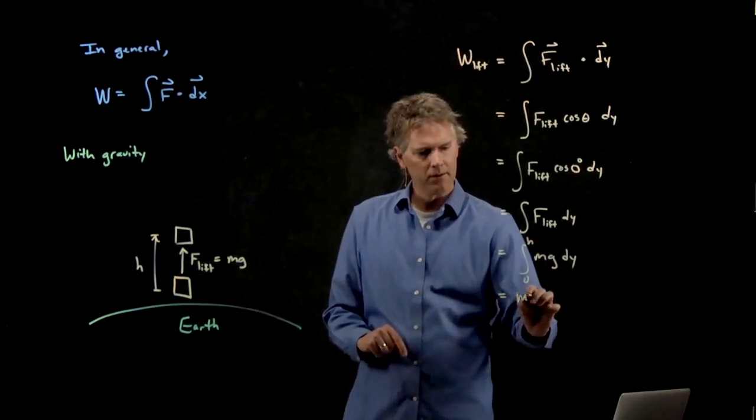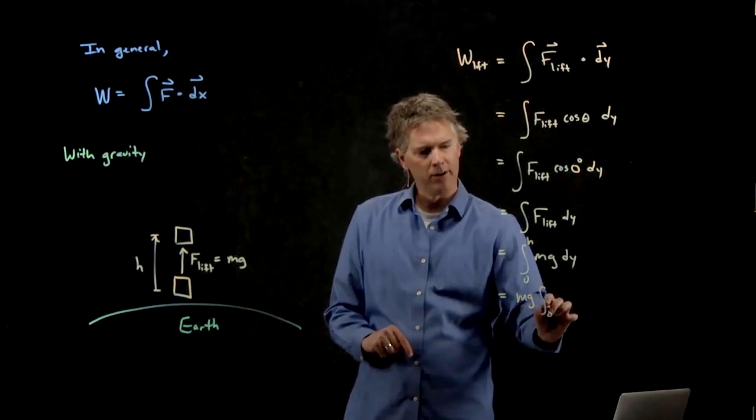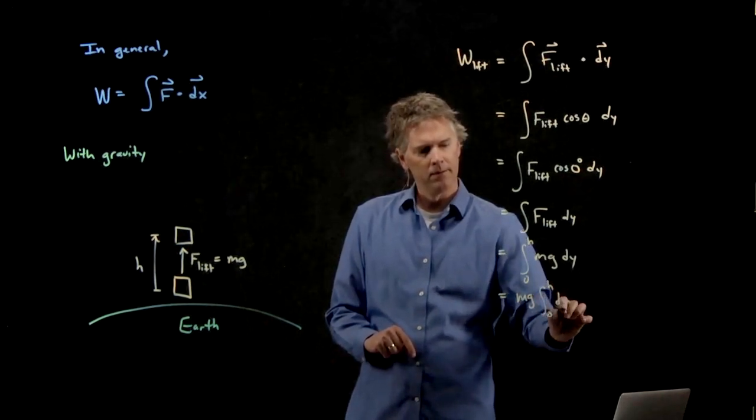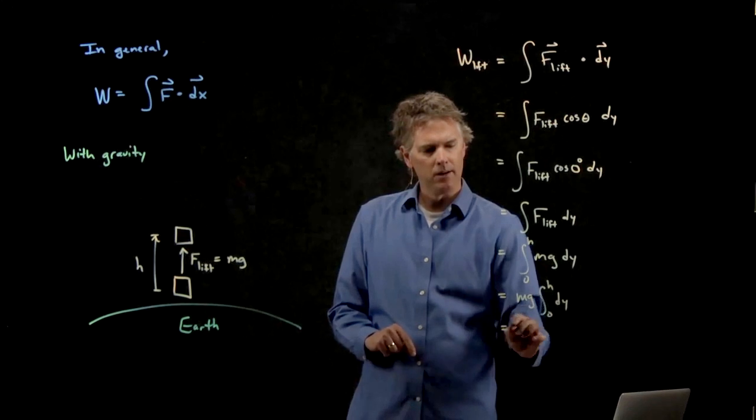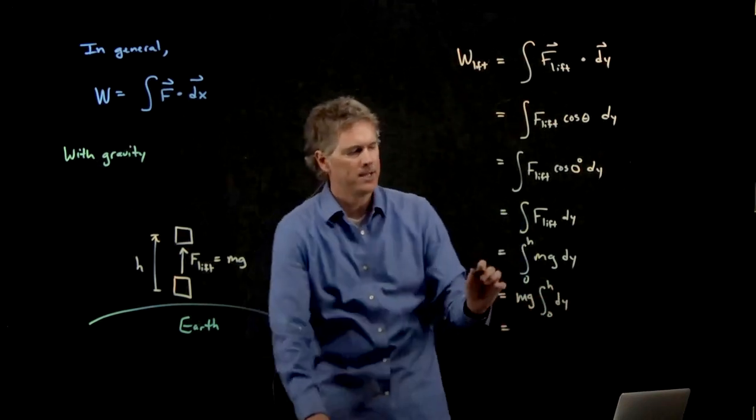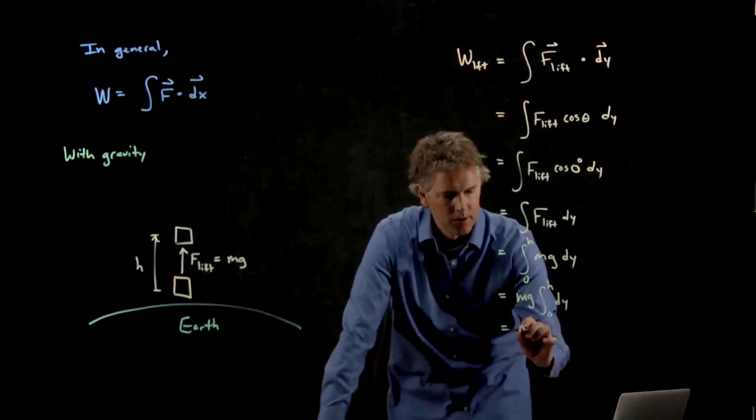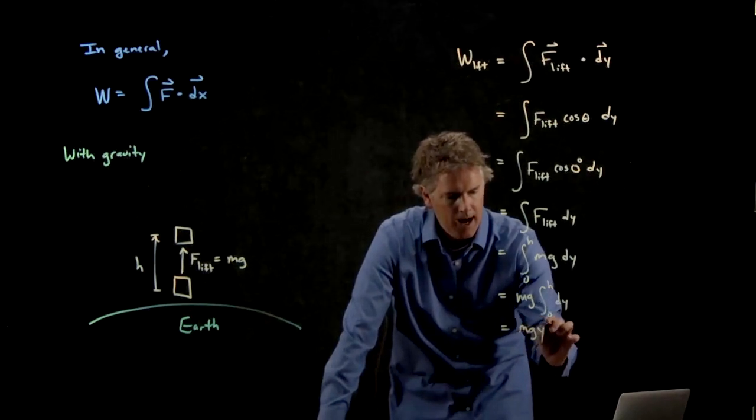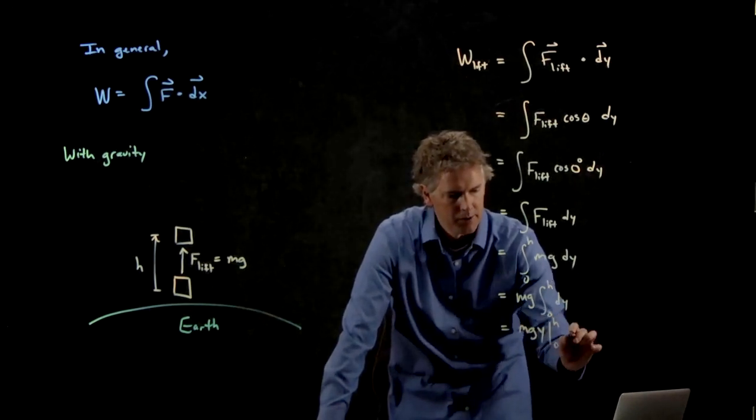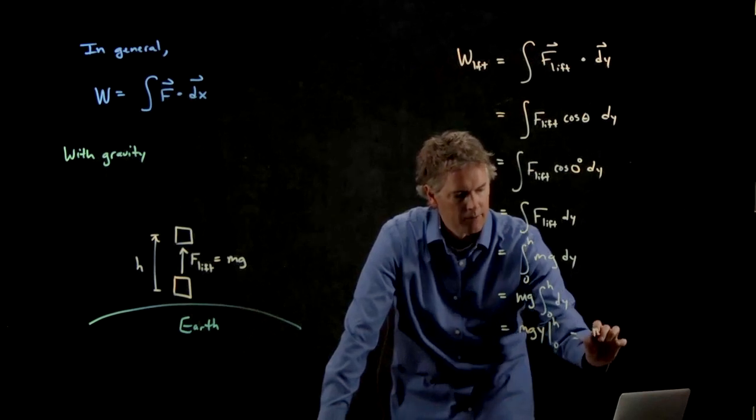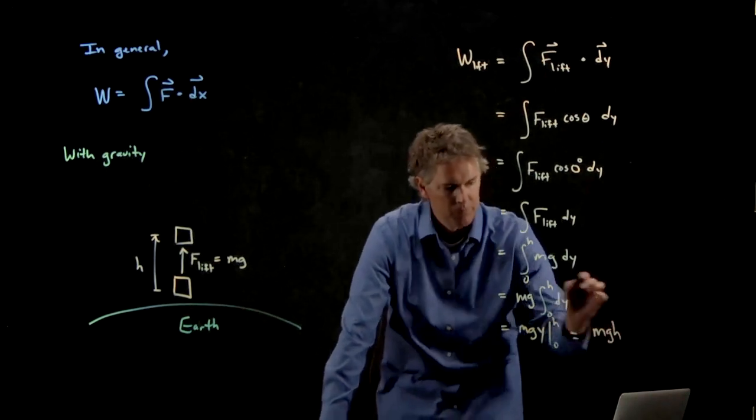mg is a constant, and so that comes out in front of the integral. And if I integrate y, if I integrate dy from zero to h, I just get y evaluated zero to h. And that, of course, becomes mgh.